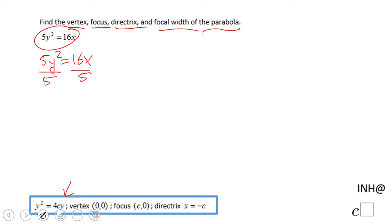We get y squared equals 16 over 5x. In this moment we need to match this 4c with this 16 over 5. We're gonna have 4c equal 16 over 5, which is going to give us a c of 16 over 20, or if we simplify that by 4, 4 over 5.